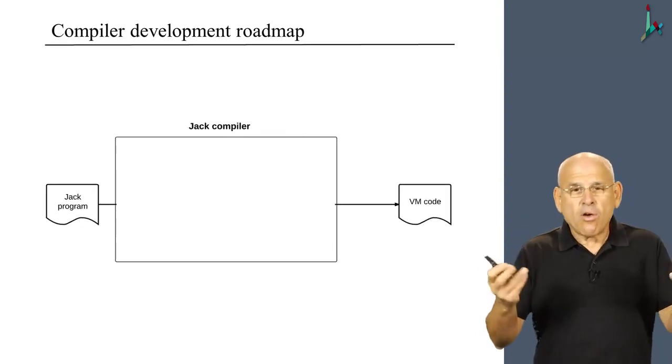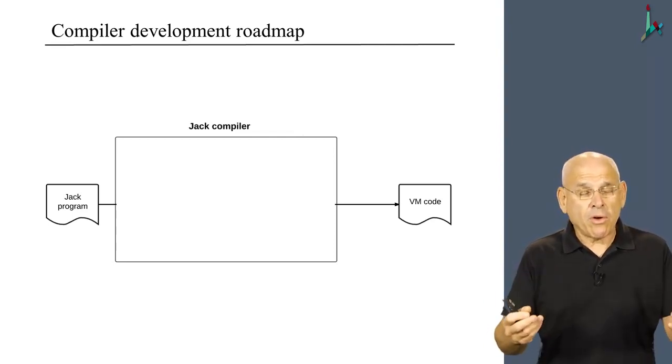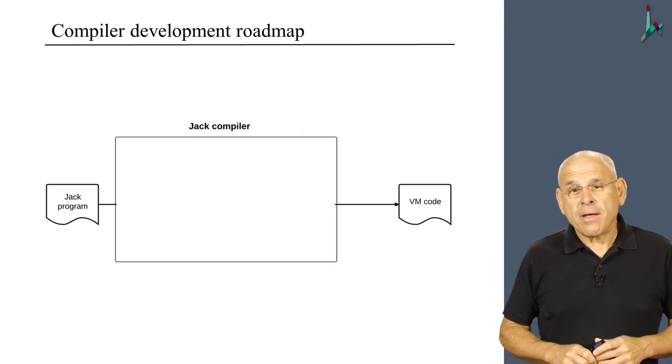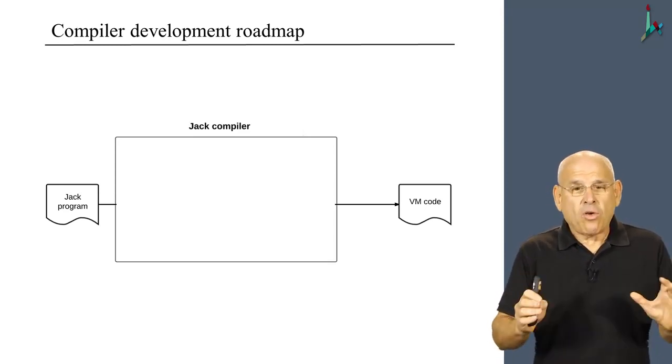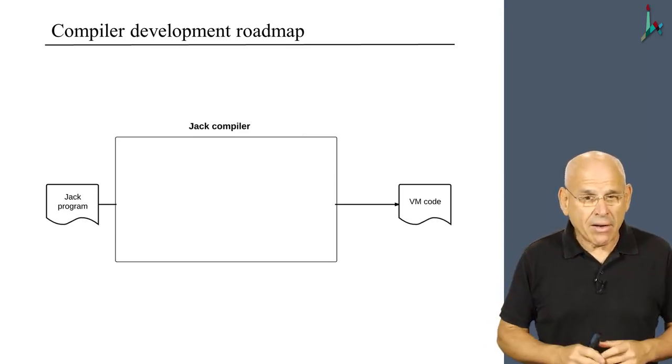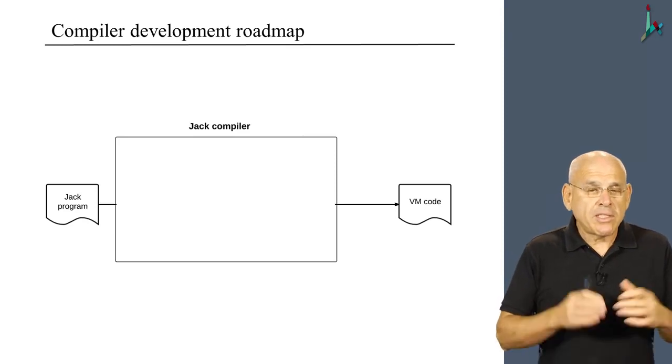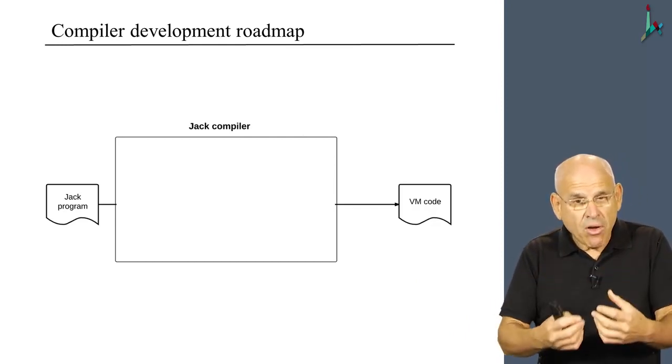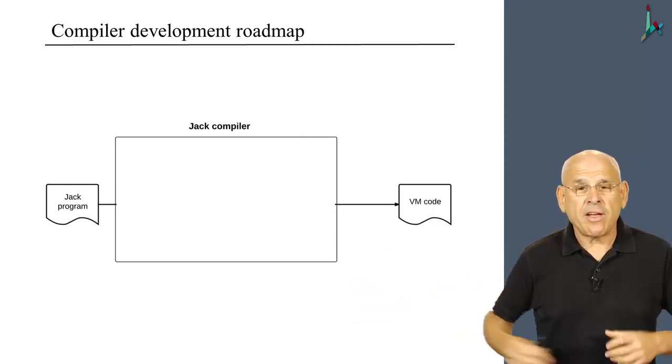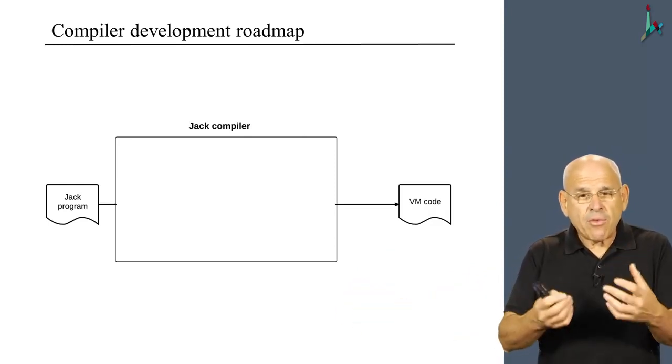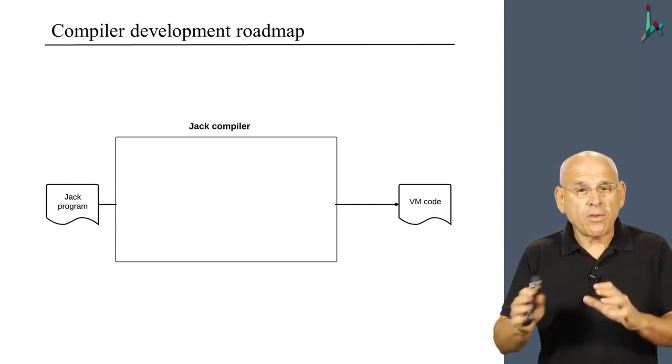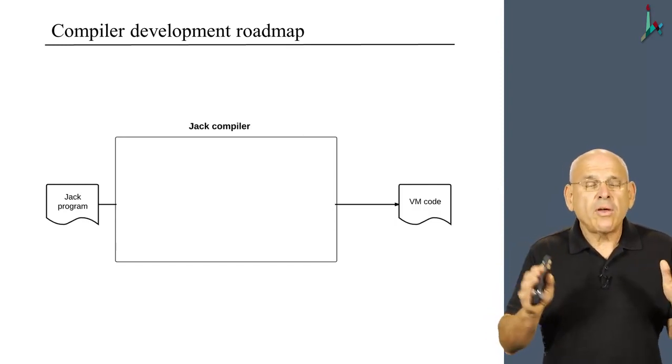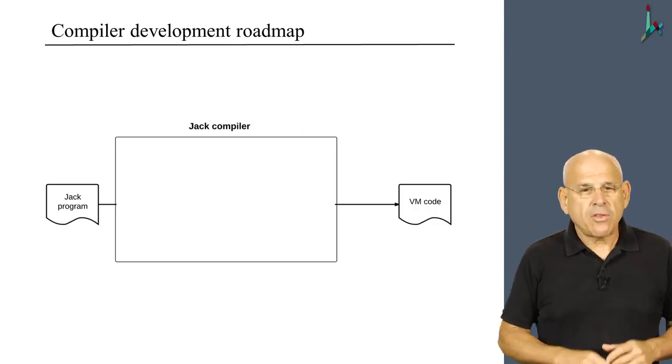So with that, let us go back to the overall roadmap. Now that's what we want to do. We want to write a compiler that translates programs from the Jack language into machine language. And in this course, we decided to write a two-tier compiler, just like the compilers of Java and C sharp. So instead of going all the way to machine code, the compiler will translate from Jack into VM code.